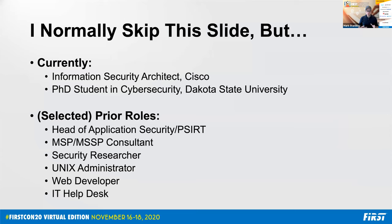Contextually, currently I'm an information security architect at Cisco. I'm also a PhD student at Dakota State University in cybersecurity. Previously, a lot of what this talk is predicated on is running product security response and AppSec over at Duo Security, which is part of Cisco. I've also done managed service provider consulting, security research, and Unix admin work. In each of those roles, the needs of my professional career and my teams are very different. When we think about how we interact with people, we really should contextualize what their needs are, what their wants are, what their problems are, and how we can maybe lessen those problems.